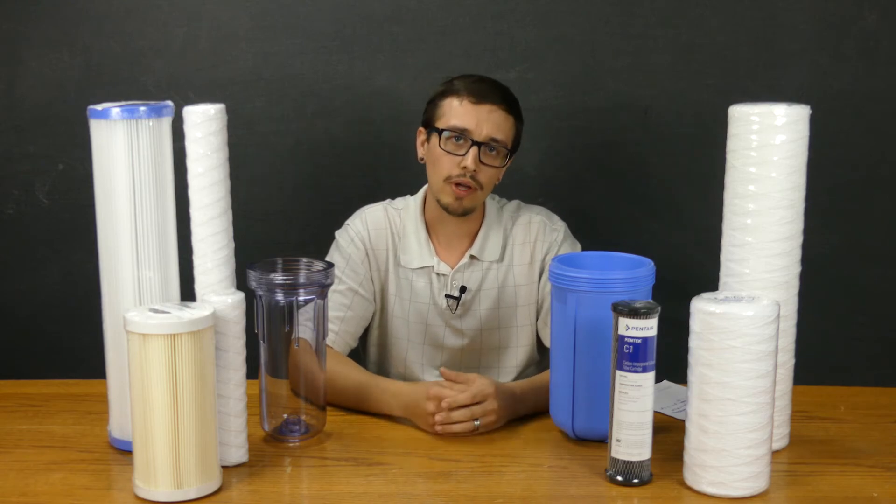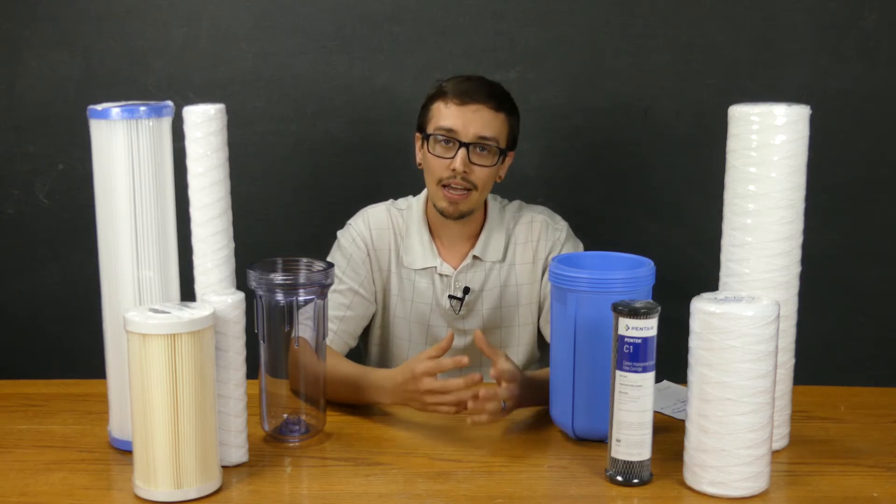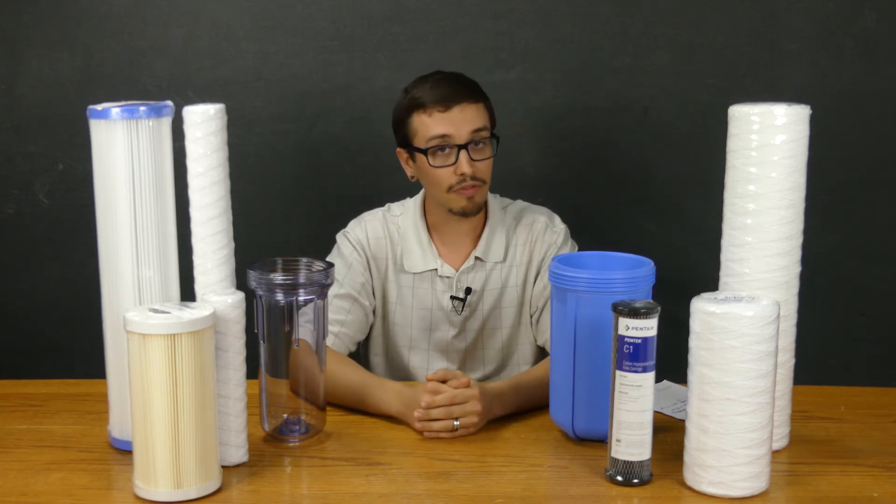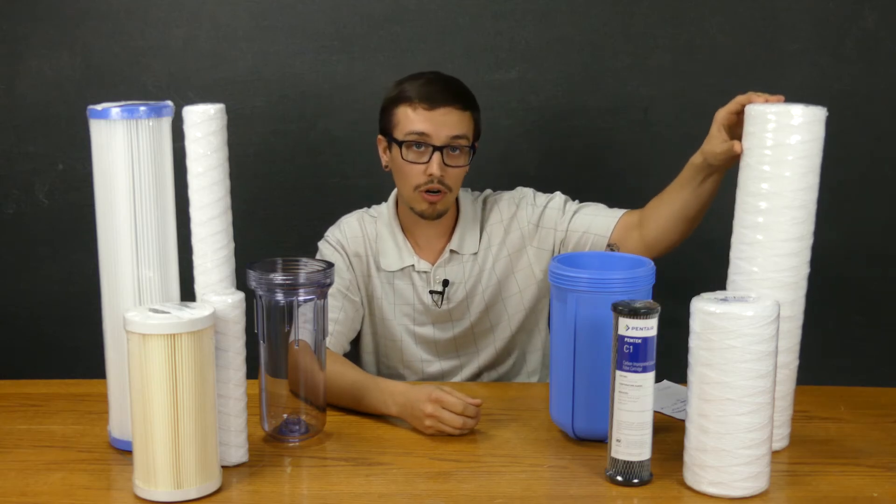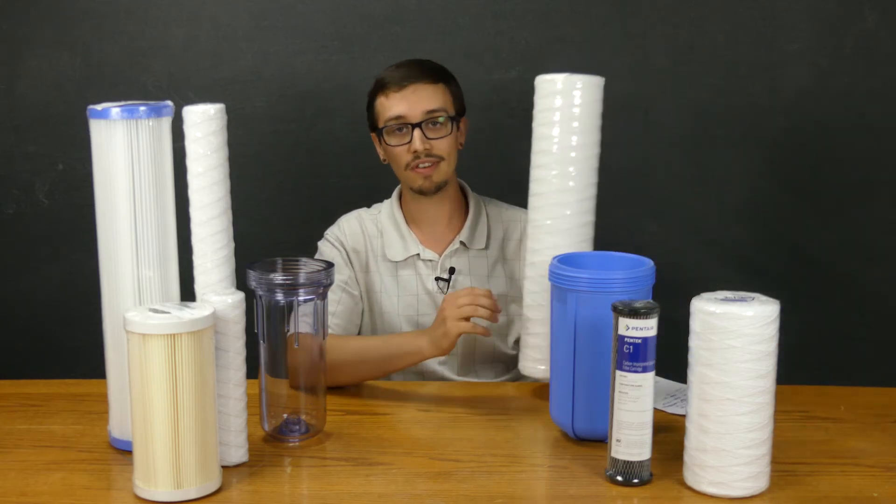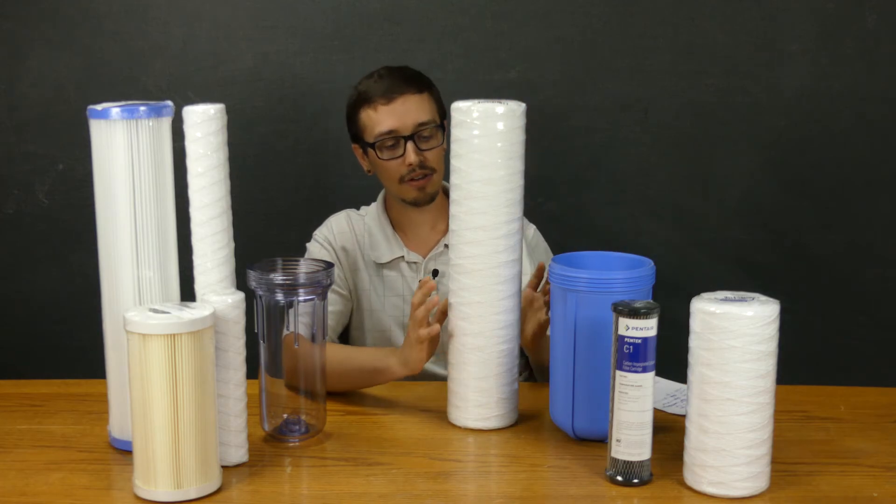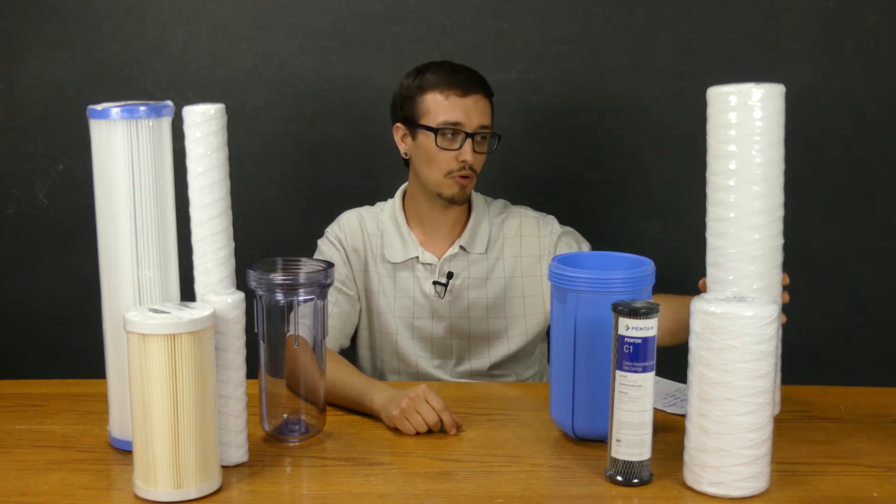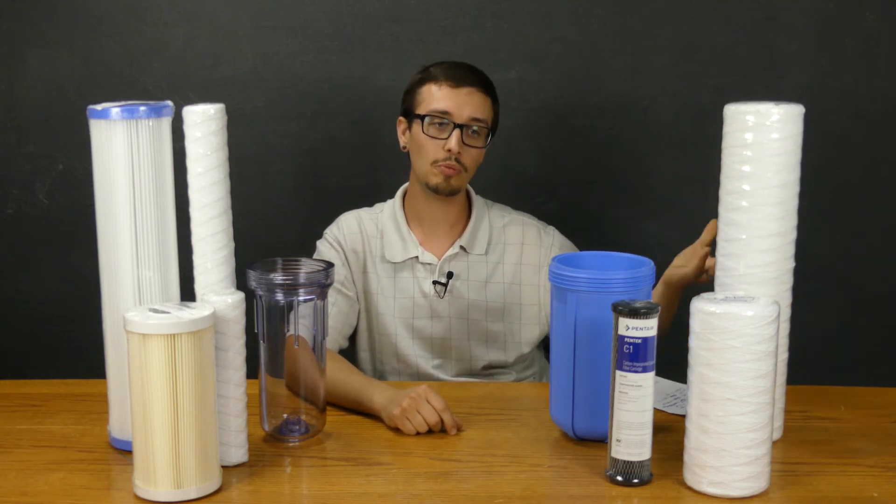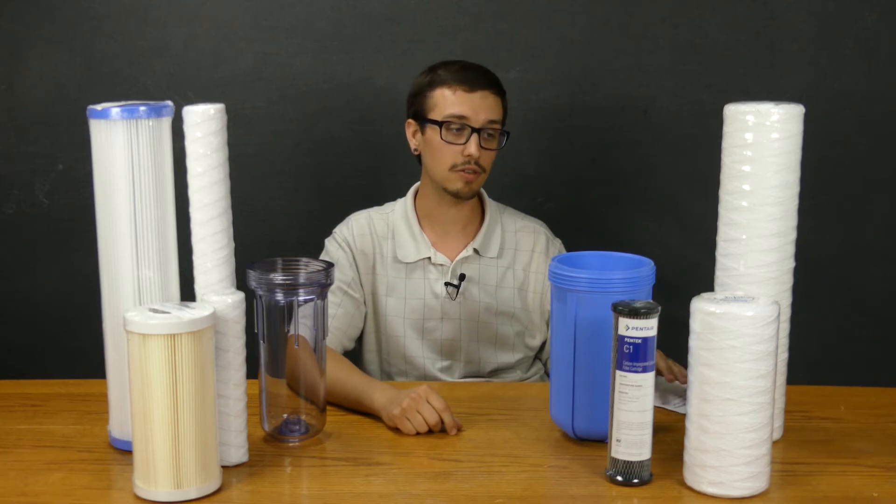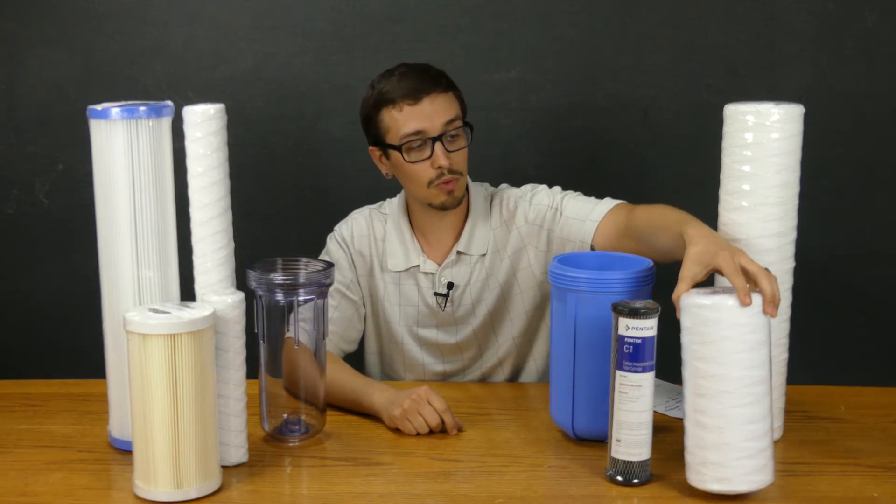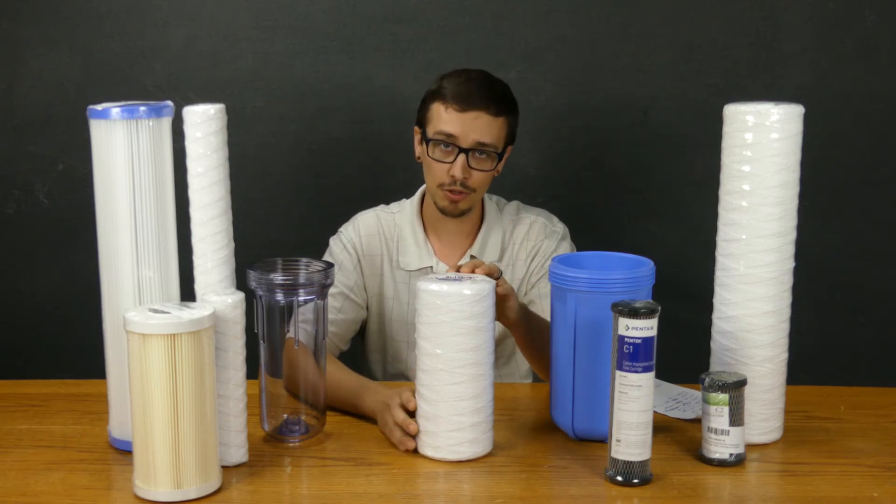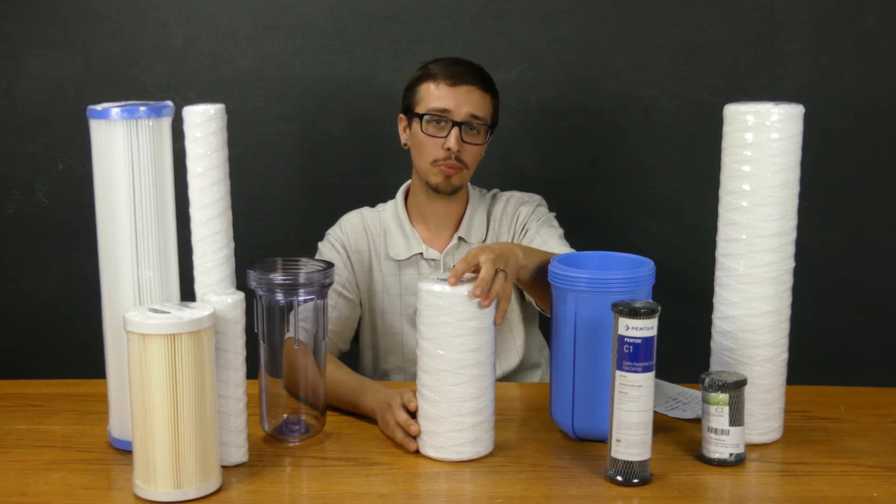Let's get more specific and talk about some of the actual flow rates and pressure losses you could expect when looking at these different filters. The first one is this large string wound filter. This is a 5-micron string wound filter. A filter like this you could expect to get upwards of about 15 gallons per minute without experiencing too much friction loss. The smaller string filter is rated at about 10 gallons per minute before that pressure loss starts to become an issue.